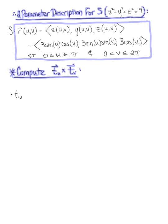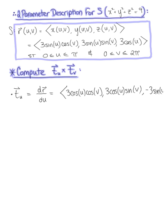The first vector we need is the tangent vector in the u direction — the partial derivative of vector r with respect to u. Differentiating with respect to u, we get the vector with components 3 cos(u) cos(v), 3 cos(u) sin(v), and −3 sin(u). Each component has a scalar multiple of 3, so we factor that out: r_u = 3 · (cos(u) cos(v), cos(u) sin(v), −sin(u)).